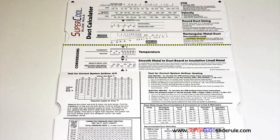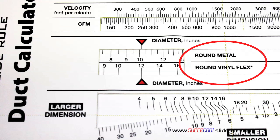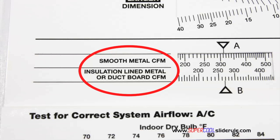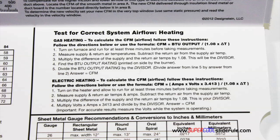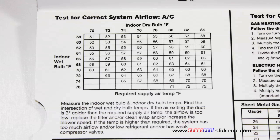Inside is packed with even more information. It performs sizing of both metal and flexible duct. It has the only direct reading conversion from smooth metal to insulation-lined metal we've ever seen. The majority of technicians have never been taught that if the insulation is on the inside of the ductwork, you cannot size it with a regular duct calculator. It has step-by-step directions for determining airflow through a gas furnace, electric furnace, or an air conditioning unit.